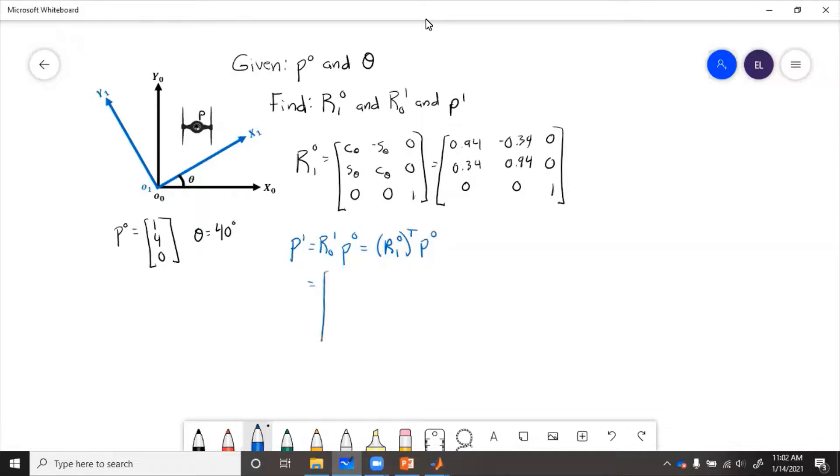So to do the transpose, we just flip the rows and the columns. So 0.94, 0.94, then we flip top and bottom across the diagonal, and we'll end up with negative 0.34, positive 0.34, 0, 0, 0, 0, 1. Then we can multiply that by P0, which we were given in the problem, 1, 4, 0.